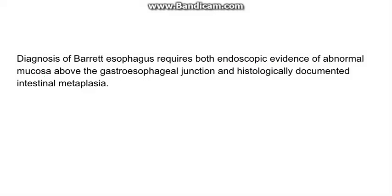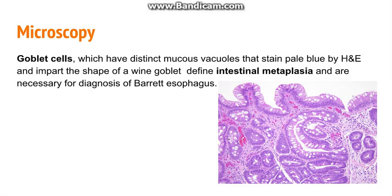In the microscopy of the esophagus, we look for very important cells known as goblet cells. In this picture, these cells contain mucous vacuoles which give them the typical shape of a wine goblet — hence they are named goblet cells. These cells define the intestinal metaplasia and are essential to diagnose Barrett's esophagus. If goblet cells are present, the diagnosis of Barrett's esophagus can be given.